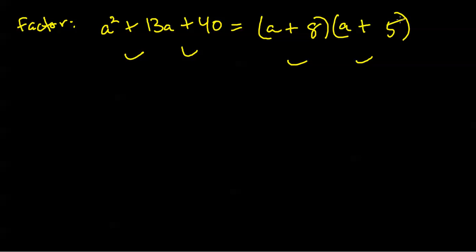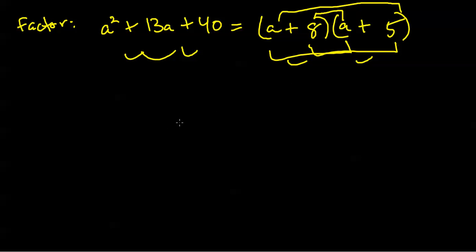a plus 8 times a plus 5. The first product is a squared, the outer product is 5a, the inner product is 8a, and those do add up to 13a. The last product is 40. The real battle is to get the inner and outer product to add up to the middle term when the original problem is stated in standard form — that is, terms arranged in decreasing degree.